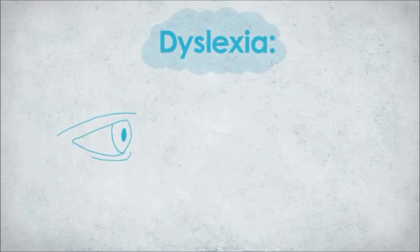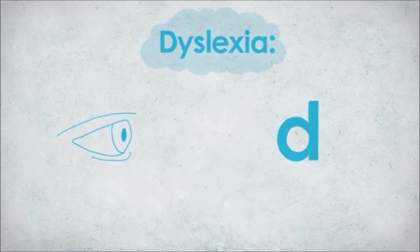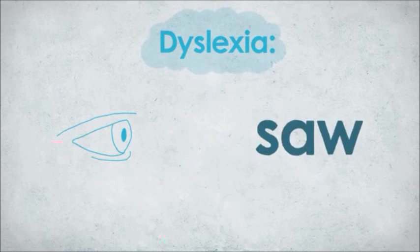When most people think of dyslexia, they think of seeing letters and words backwards, like seeing B as D and vice versa, or they might think people with dyslexia see saw as was.